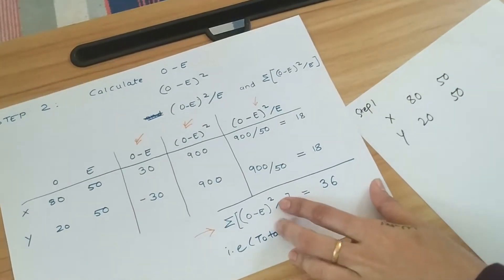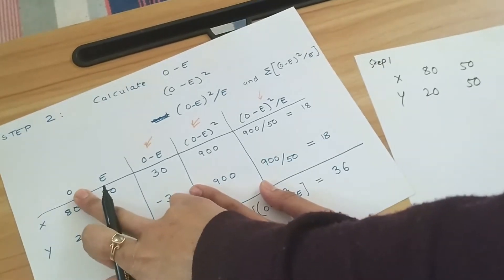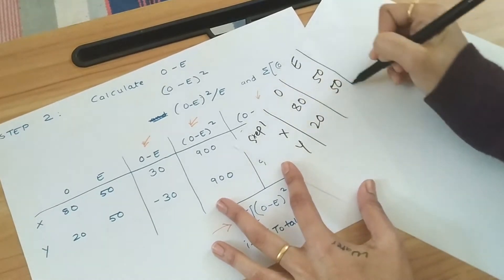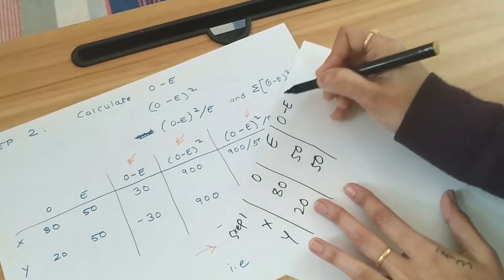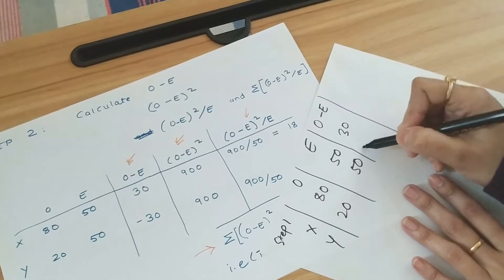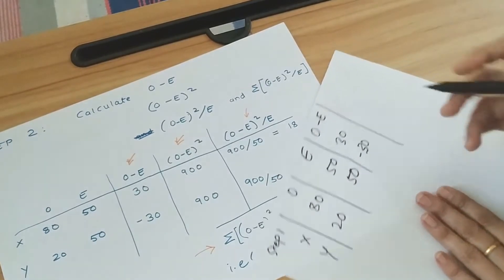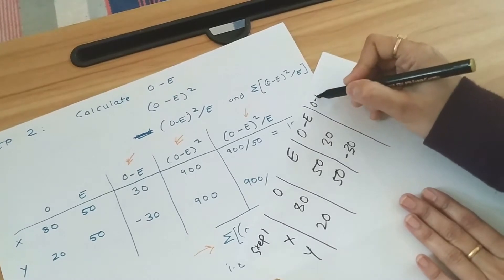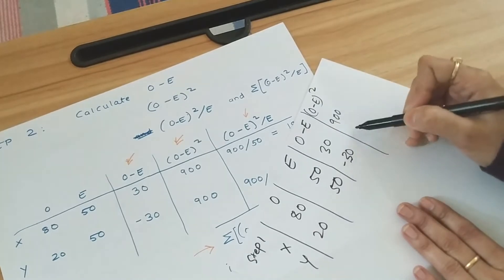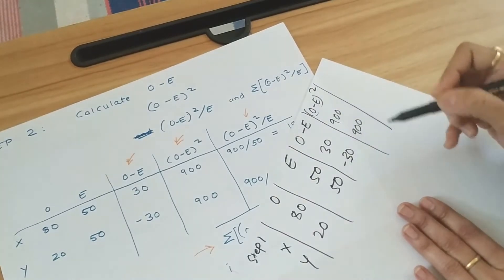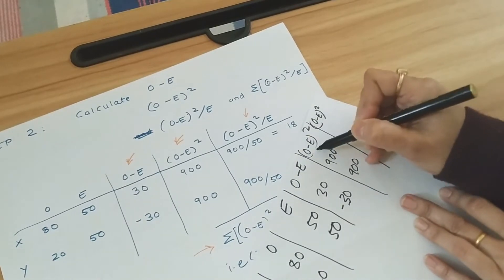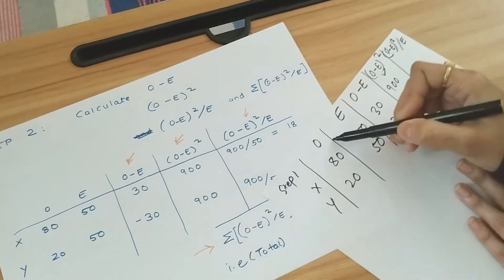Second step is we call it O and E. This is O and E, and we directly subtract O and E. So 80 minus 50 is 30, and 20 minus 50 is minus 30. Then we calculate O minus E the whole square. So 30 squared is 900, and minus 30, negative times negative becomes positive, is also 900. Now O minus E the whole square, that is this value, divided by E, that is this value.